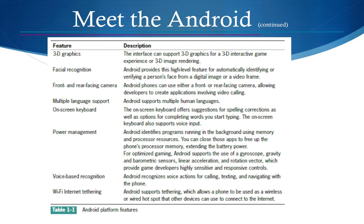Android features include 3D graphics — the interface can support 3D interactive games. It also has facial recognition, which automatically identifies and verifies a person's face. For example, in a secure banking application, facial recognition ensures only the authorized person can access the device — something much harder to hack than a password. Other features include front and rear cameras, multiple language support, on-screen keyboard, power management, and voice-based recognition.